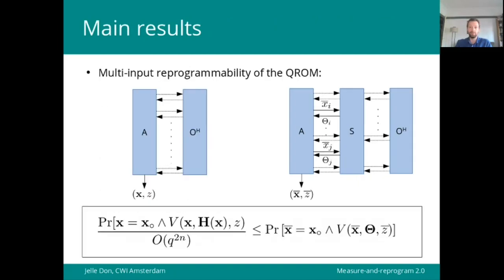In general, that is. Because we present a theorem that deals with so-called multi-input reprogrammability of the QROM. It says that if we have an adversary making q quantum queries to some random oracle h, and then outputs an array of input values to the oracle and some additional output z, such that the probability of this output satisfies some arbitrary predicate V,